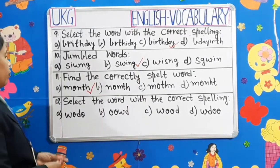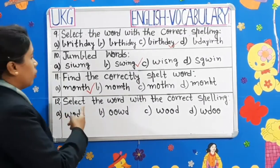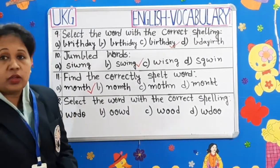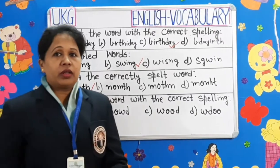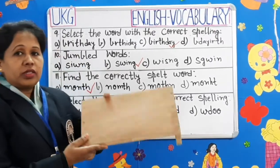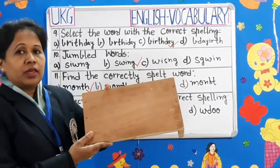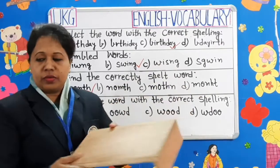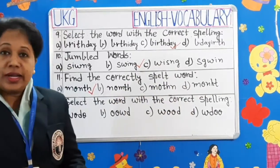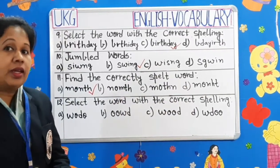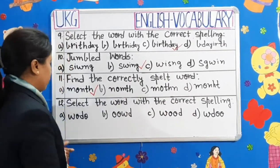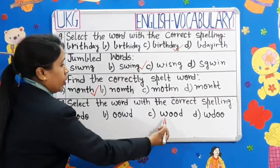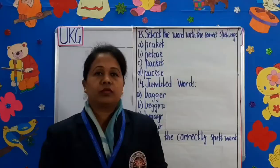Question number 12: Select the word with the correct spelling. Can you tell me children, what is this? Yes, it is a piece of wood. So, let's select the correct spelling of wood — W-O-O-D.